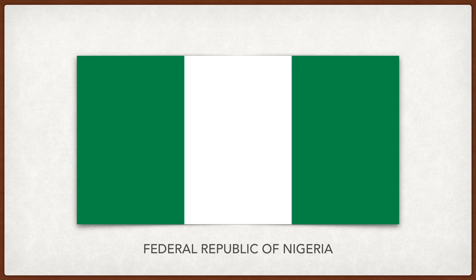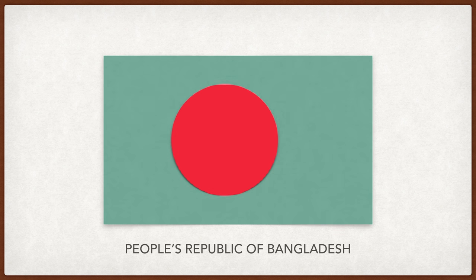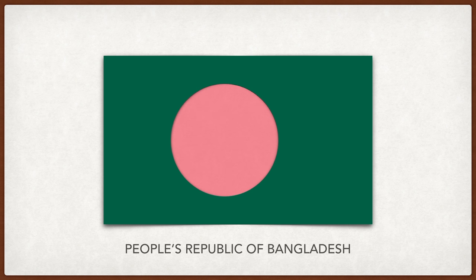Nigeria. The green represents natural resources, and the white represents peace. Bangladesh. The circle represents the sun, and the red color the blood of those who fought for independence. The green is for the lush lands of Bangladesh.